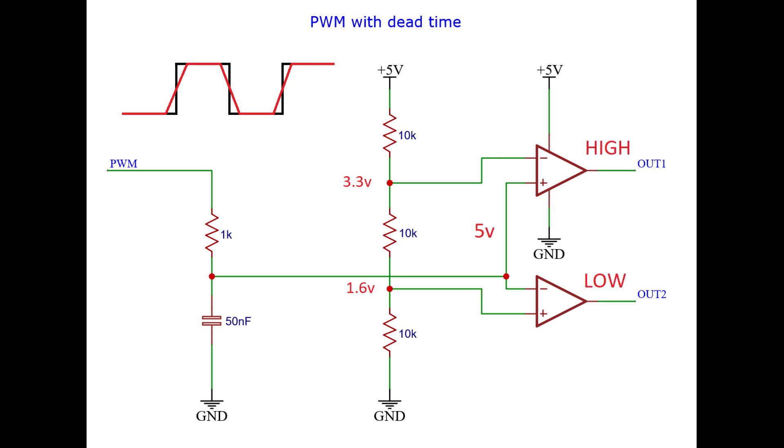At the other end, above 3.3 volts, the output 1 signal is high and the output 2 signal is low. But the signal always has to travel through the region in the middle, between 1.6 volts and 3.3 volts. And in that region, both signals are low, which is exactly what we want.